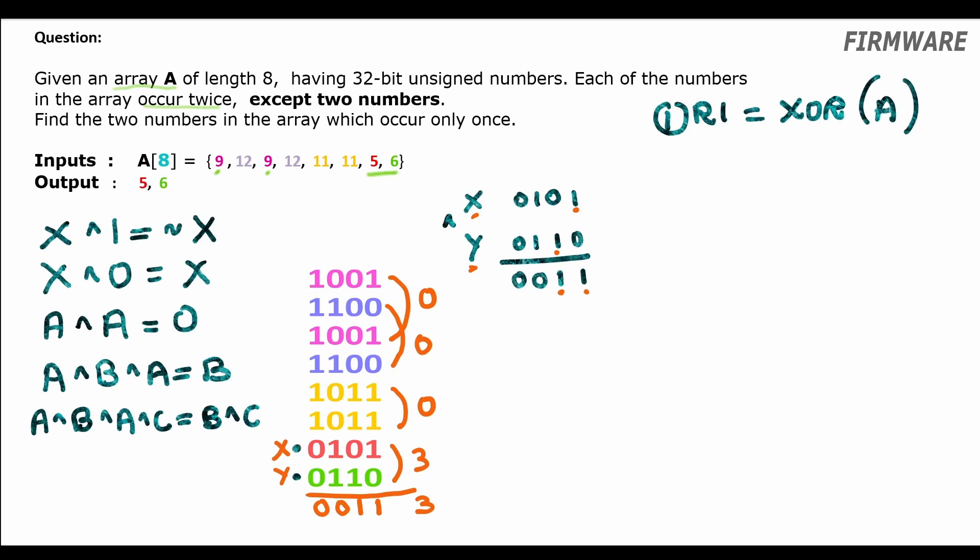Now from our previous episode we know how to unset all bits in the number except the rightmost set bit. To unset all the bits except the rightmost set bit in the XOR result we will do step 2. Rightmost bit of result 1 is equal to result 1 and minus result 1. In our example we have rightmost set bit in LSB position therefore the output of this operation will be 0 0 0 1.